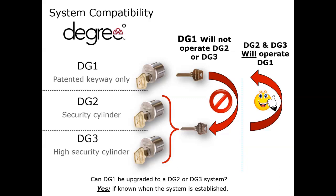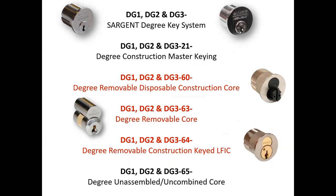A DG1 key will not operate in a DG2 or DG3 cylinder — it will not even go in. The DG2 and DG3 cylinders have the angle pins; the DG1 cylinder has straight pins. So the DG1 key will not even insert and operate a DG2 or DG3 cylinder.